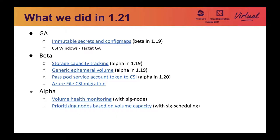We also have a few features that moved to beta in 1.21. Storage capacity tracking became a beta feature. Traditionally, the Kubernetes scheduler was based on the assumption that additional persistent storage is available everywhere in the cluster and has infinite capacity. Topology constraints addressed the first problem, but without this feature, pod scheduling was still done without considering that the remaining storage capacity may not be enough to start a new pod. The storage capacity tracking addresses that by adding an API for a CSI driver to report storage capacity, and uses that information in the Kubernetes scheduler when choosing a node for a pod.